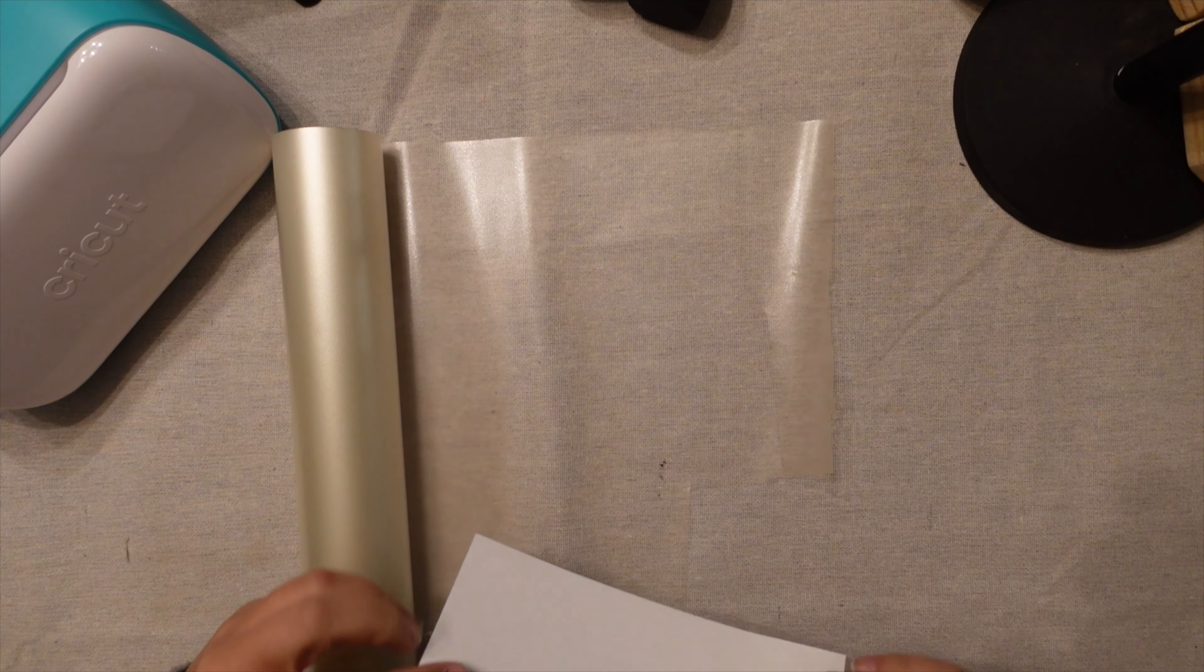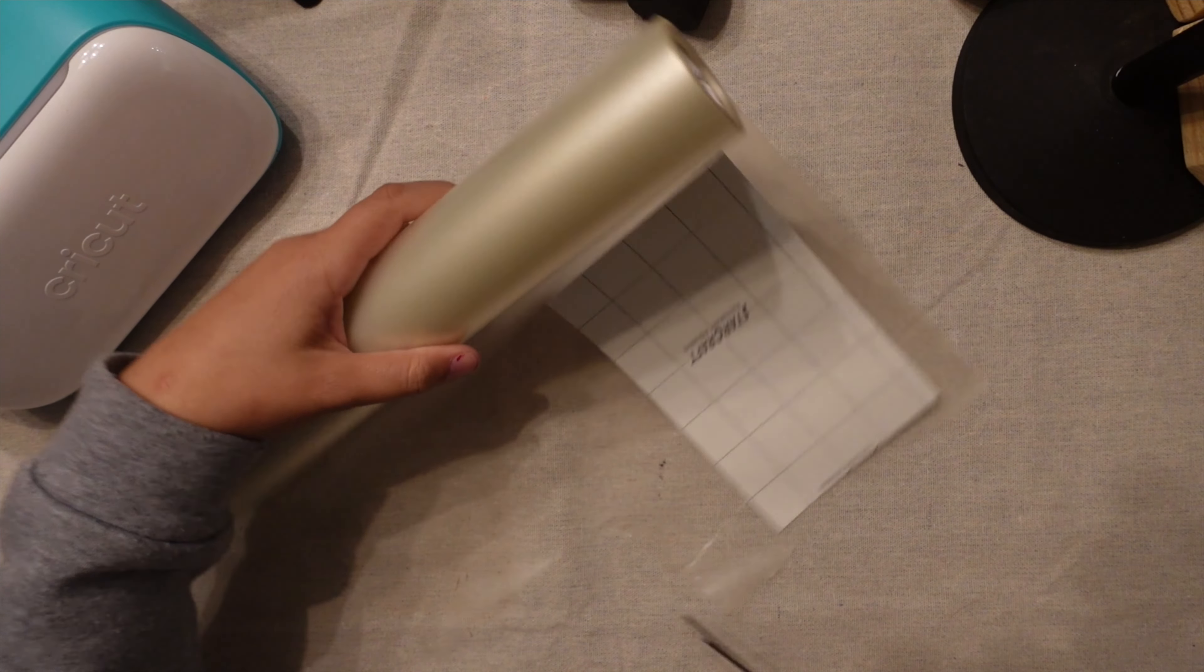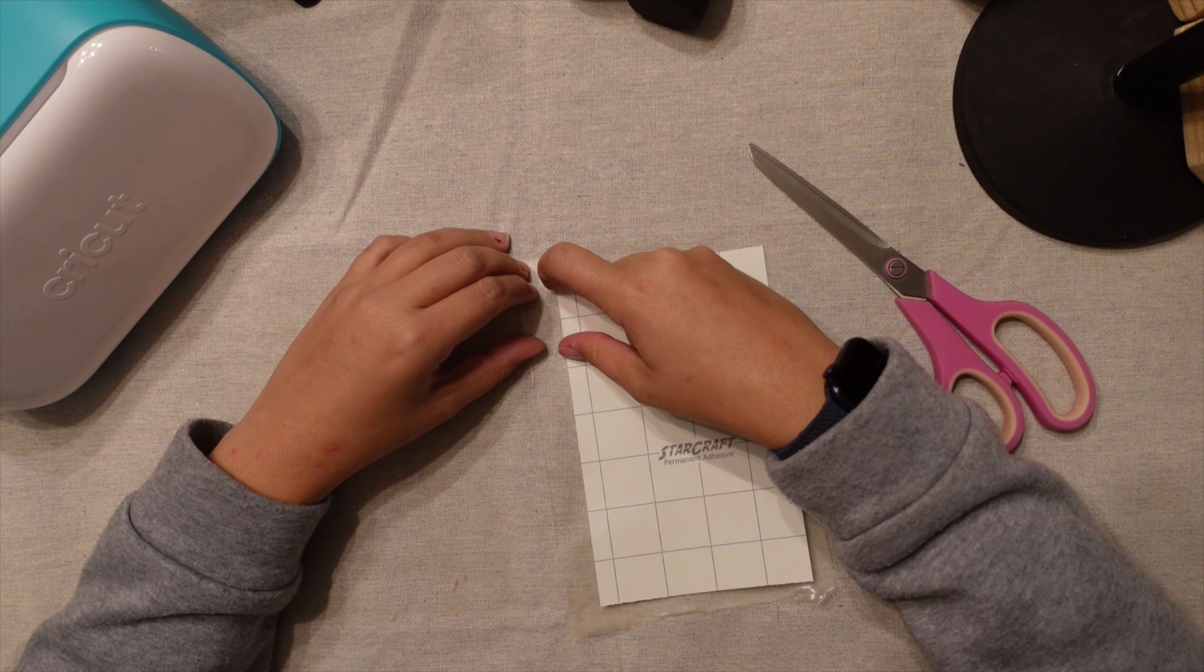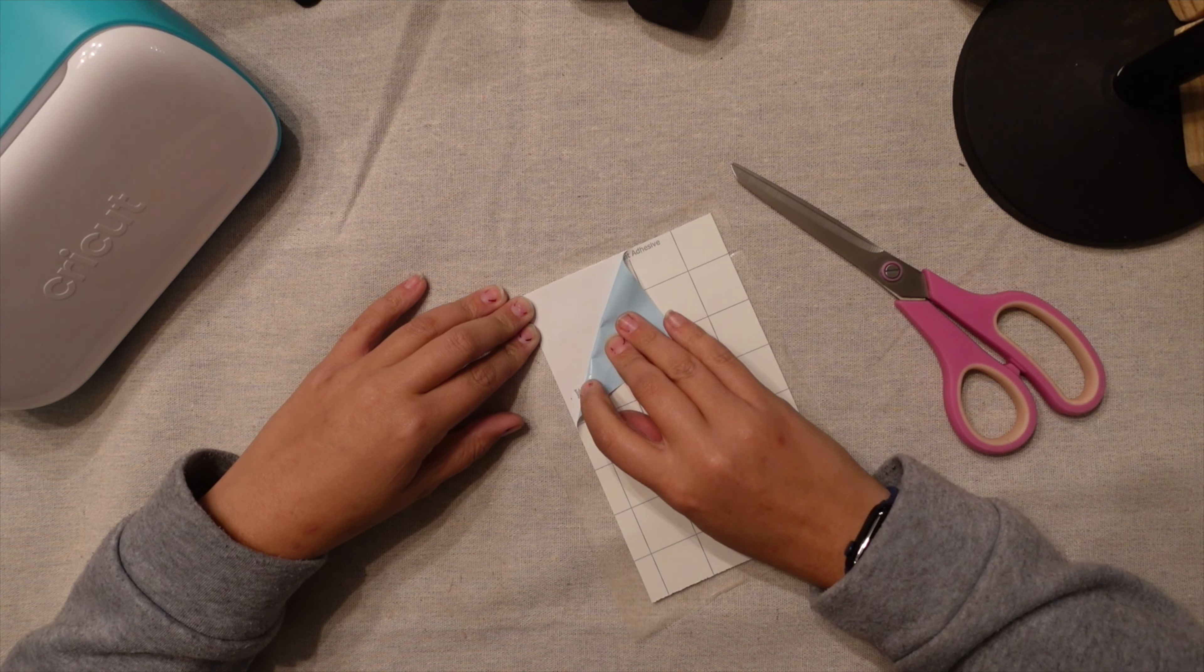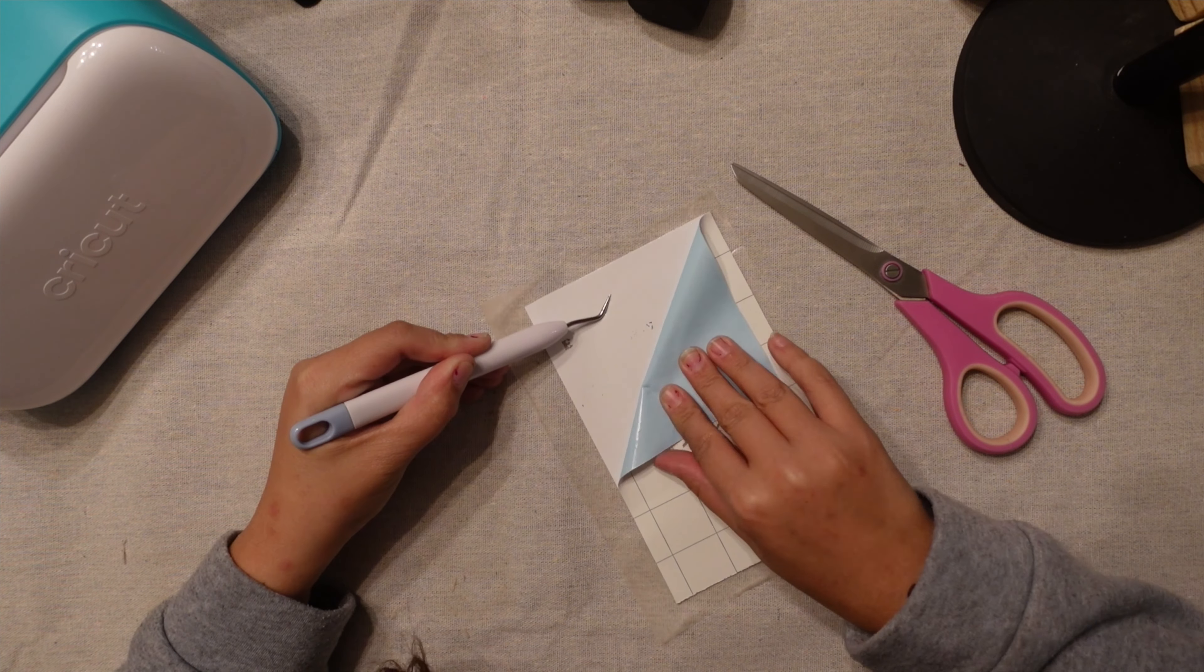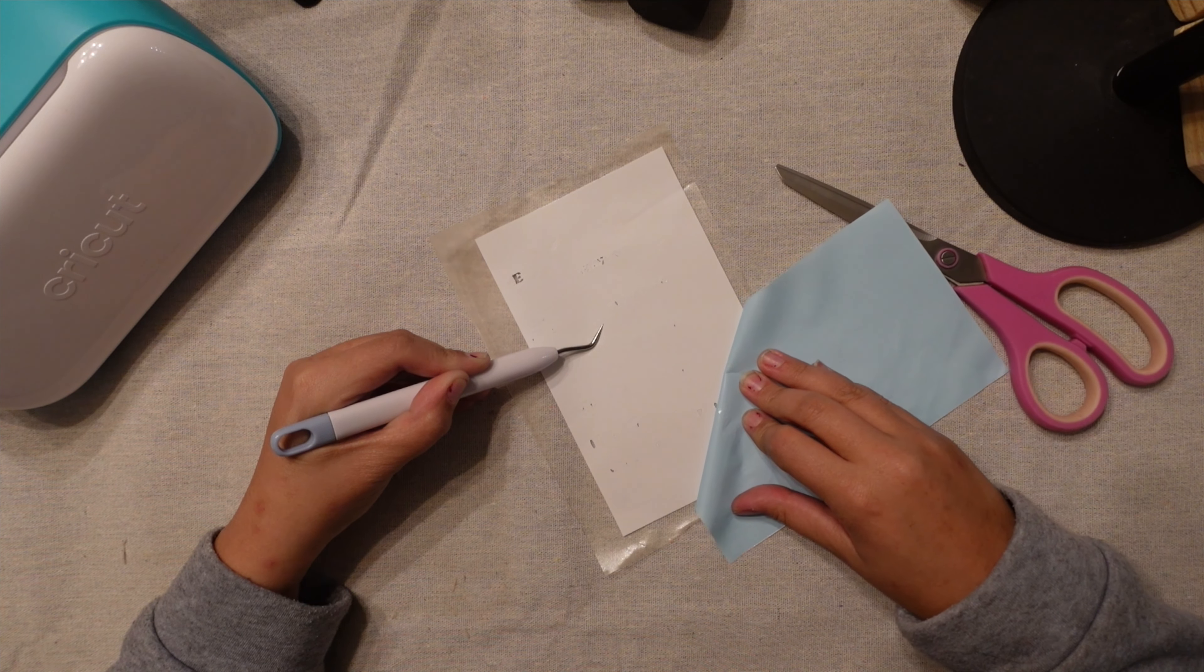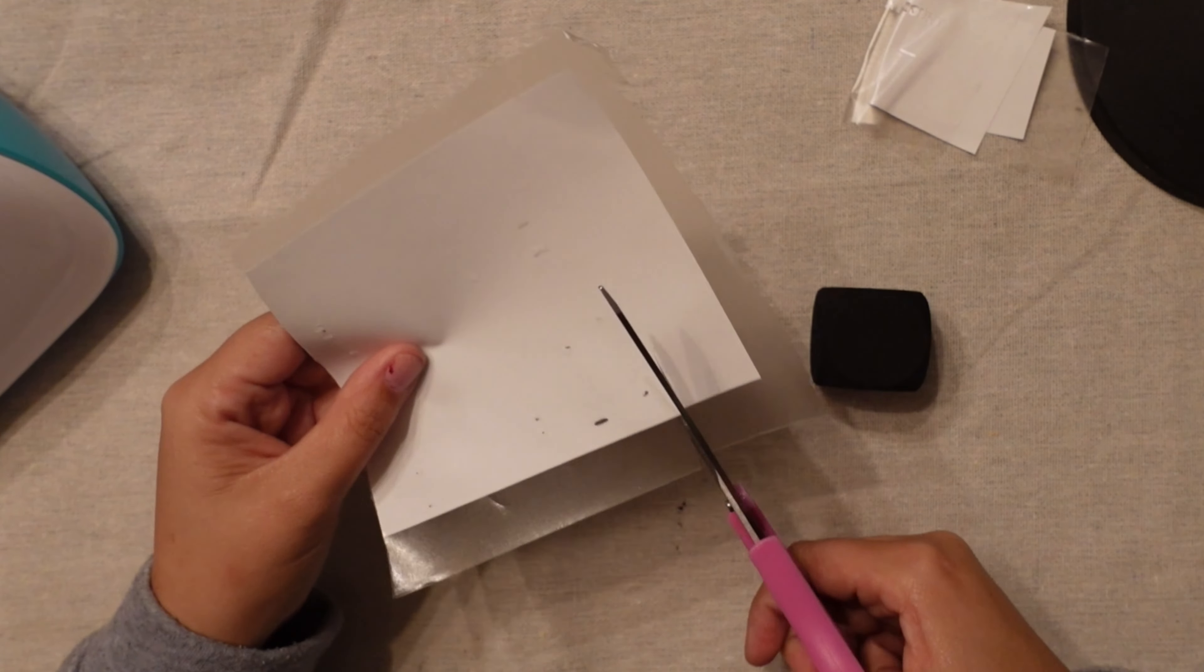Now it's preparing and it will start to cut out our design. Now I'm going to remove the vinyl from the mat. I'm just going to flip it over and pull the mat away from the vinyl that way we don't risk ruining any of the pieces.